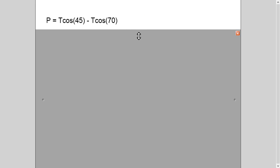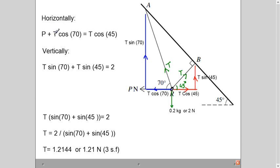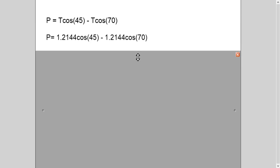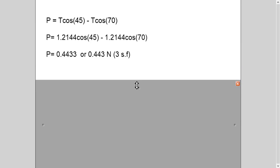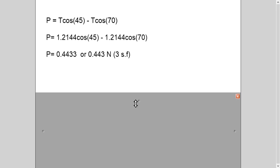So now I will substitute the value of T in this equation to get the value of P. And this equation I have gotten from where? From here only. So I'm substituting the value of T here, simple calculation, and I got it. Again, I have written in four decimal places and final answer in three significant figures.